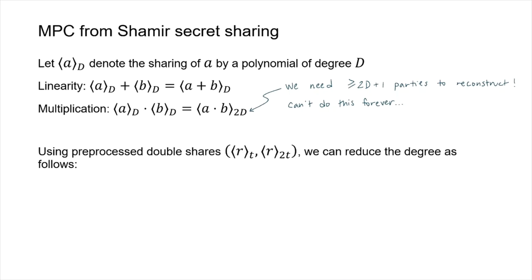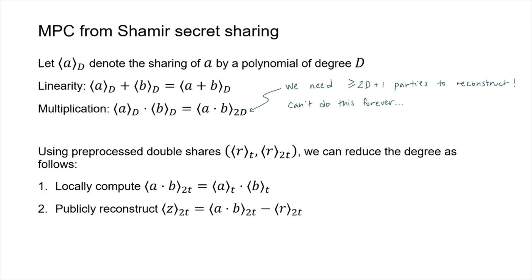Since we allow a pre-processing phase, we can make use of it to create what we call double shares, which are degree-t and degree-2t sharings of a random value r. For each pair of double shares we can reduce the degree as follows: parties locally compute the larger degree product, then use the degree-2t double share r to mask their product. We then publicly reconstruct the difference between the two — needing only 2t + 1 parties — and once that public value z is known, parties use the degree-t sharing to unmask it and obtain shares of the product.